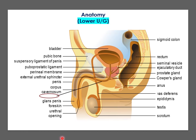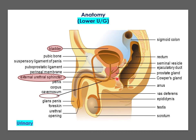Before we proceed with the lecture, let's look at a refresher on the anatomy of the lower urogenital tract. It consists of various structures associated with the urinary system, among them the bladder, the external urethral sphincter, and the urethra. The urethra itself is divided into four main parts: the part passing through the neck of the bladder, the prostatic urethra passing through the prostate which receives the ejaculatory ducts from the vas deferens and seminal vesicles, the membranous urethra passing through the sphincter, and the penile urethra.